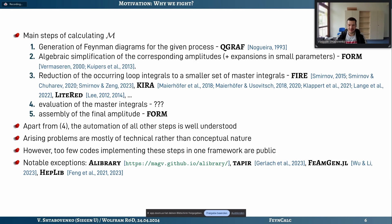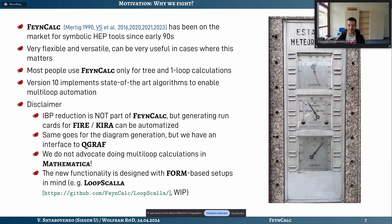In our field, many people are quite secretive — they've developed private codes over the years and are still using them, not willing to share, partly because they don't want to support them and partly for competitive advantage. Luckily, this is starting to change: several codes published in recent years try to automate some steps, and younger people more geared toward open source are entering the field. In this context, I'd like to talk about our contribution using FeynCalc.